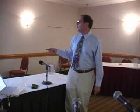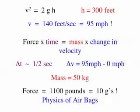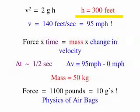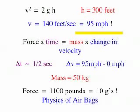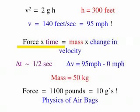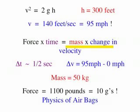Gwen starts with zero velocity, accelerates due to gravity, and acquires a large speed. Let's say she falls 300 feet, which turns out to be only halfway down the pylon for the George Washington Bridge. Then she's going nearly 95 miles per hour if we neglect air resistance. We take force equals mass times acceleration and bring the time over, and what we have on the right-hand side is mass times change in velocity — which in physics is called change in momentum, usually represented by the letter p.